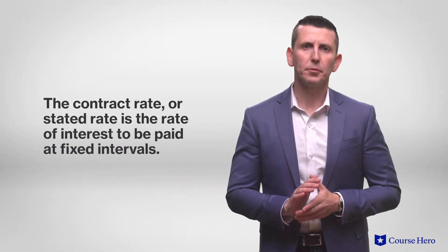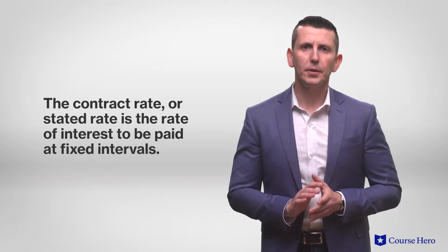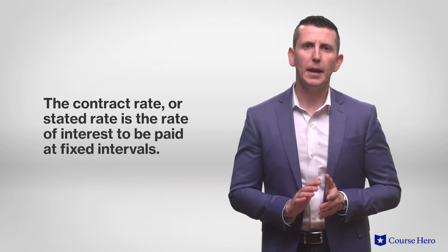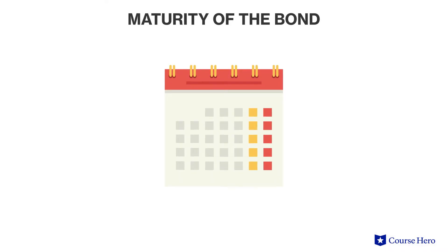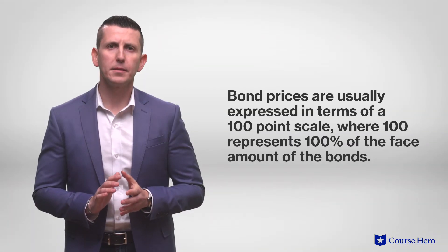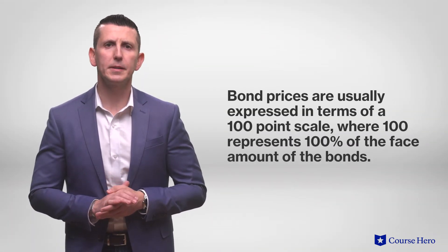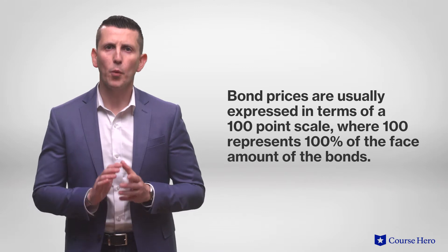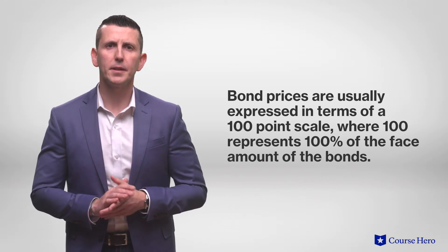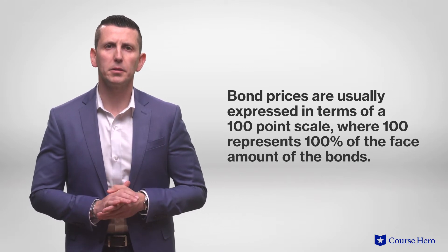The contract rate, or stated rate, is the rate of interest to be paid at fixed intervals. The term, or maturity of the bond, is the number of periods the lender must wait before receiving the principal loan back. When issued, bond prices are usually expressed in terms of a 100-point scale, where 100 represents 100% of the face amount of the bonds.